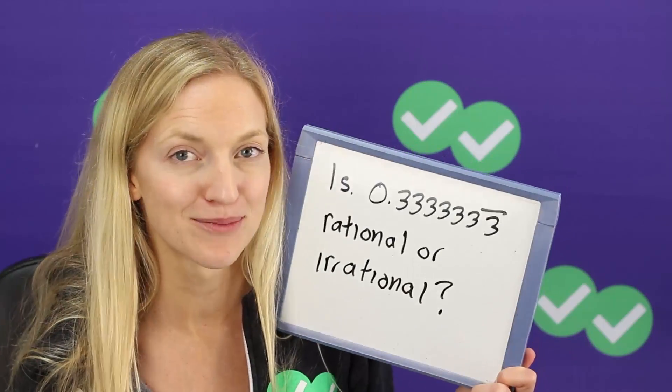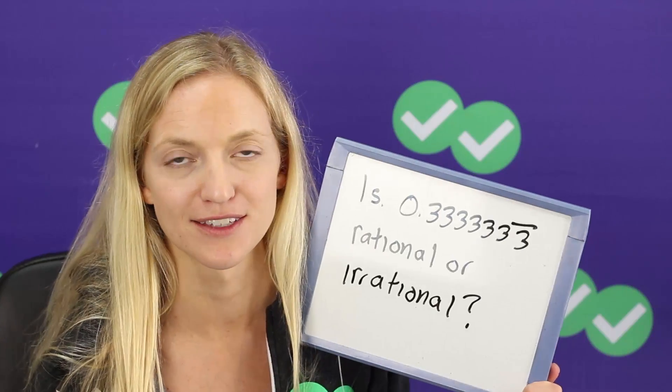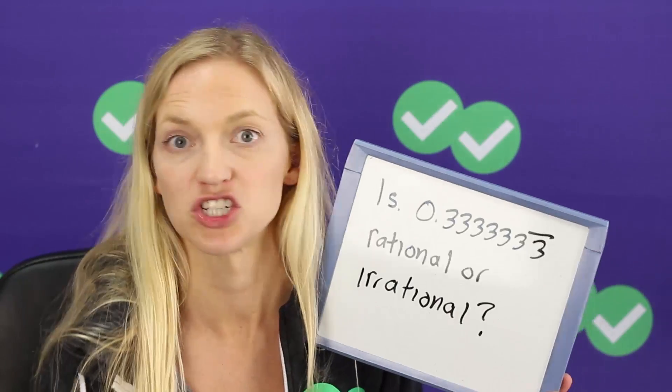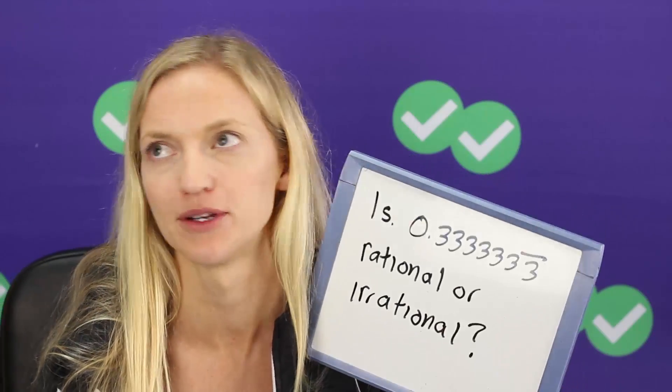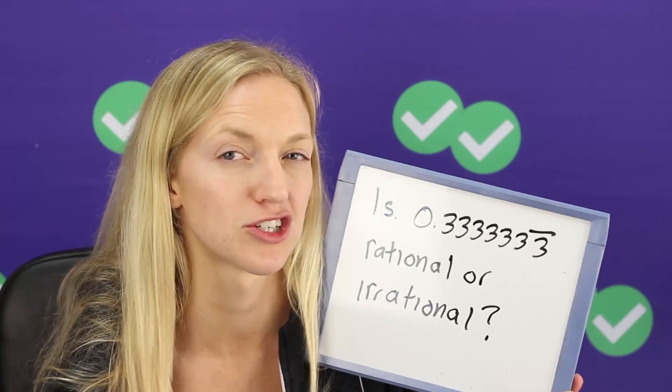So just because you have a really long decimal doesn't mean it's irrational. It needs to be non-repeating and then also non-terminating. It just keeps going. It doesn't have some end to it. So for example 0.175 if that's all there is, that's rational even though it doesn't seem to be repeating. So quick quiz.